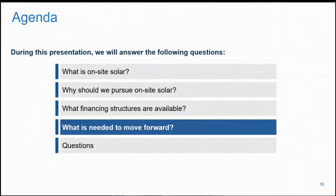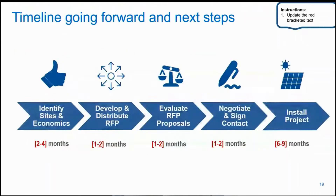The last section of this deck includes a section on what should be requested from key decision makers moving forward, and is fairly straightforward without too many instructions on modifying text. This first slide speaks to the general procurement process, how long each process will likely take so that the key decision makers can have a better understanding of where you are currently in the process. The only instructions here are to modify the red text accordingly.